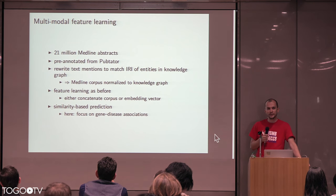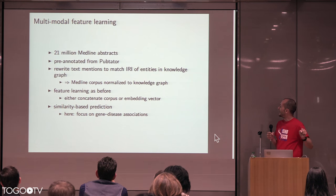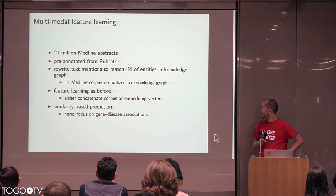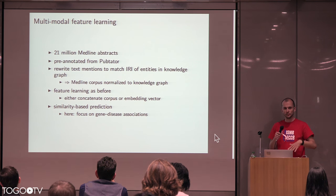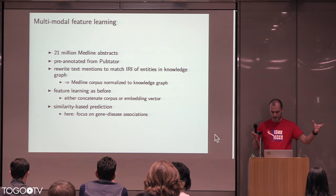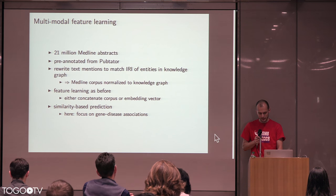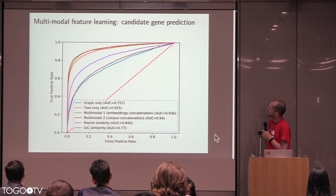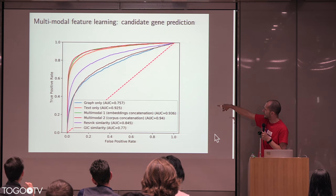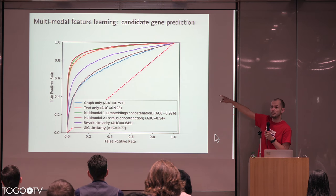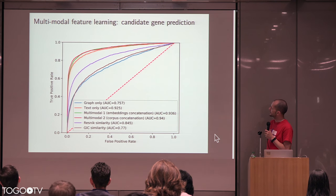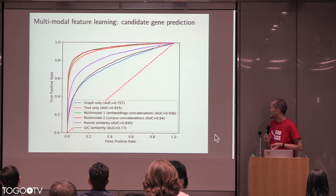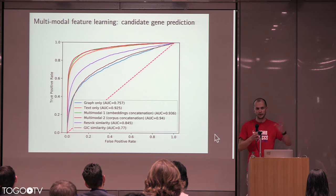We tested this on MEDLINE, taking all of MEDLINE pre-annotated with PubTator, rewrote them to be token-identical, getting a normalized text aligned to our knowledge graph. Then we did feature learning as before — either concatenating the corpus and applying our word2vec model on the whole corpus, or doing it separately and concatenating the vectors. We tested this for finding gene-disease associations. The violet line is semantic similarity, the blue line is graph only — actually the worst performer here. Text alone is the orange curve, which works really well. But when we combine text and graph, we get the best performance, showing complementary information between graph and text.